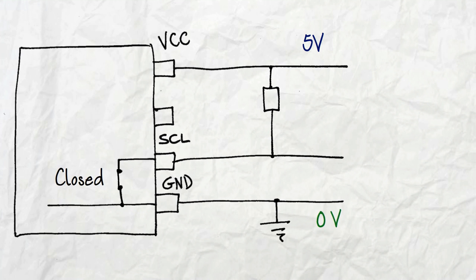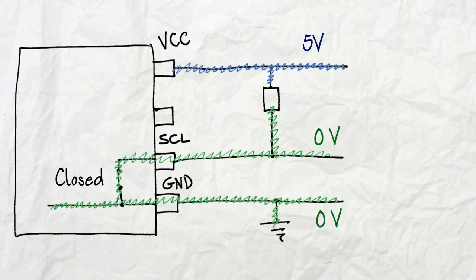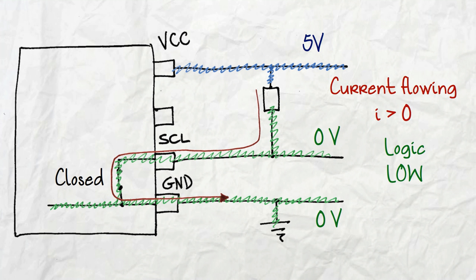If you close the switch, then the 0 volt potential from the ground will now be on the green region. The signal on the clock line is now logic low. Because of the potential difference across the resistor, a current will flow through the device.